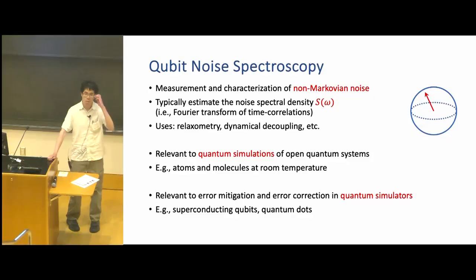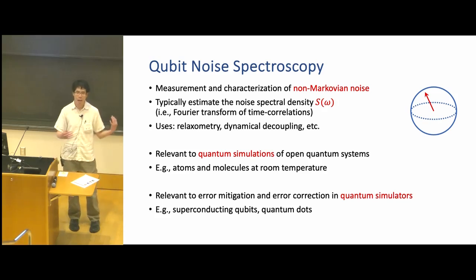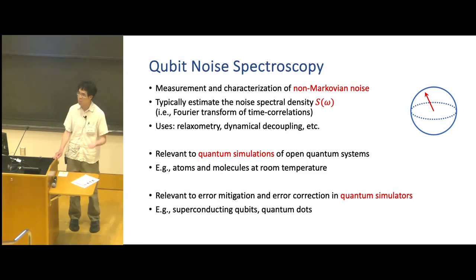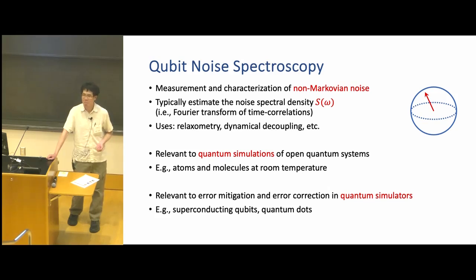This is about noise spectroscopy, which is a well-known technique for measurement and characterization of non-Markovian noise. Non-Markovian noise is noise that has time correlations, meaning the environment has a memory — it remembers things that happened to it in the past. Non-Markovian noise has a long history and had a big impact on the development of classical electronics, which suffer from non-Markovian noise such as 1/f noise or colored noise. There's been a lot of attention toward understanding and mitigating it.